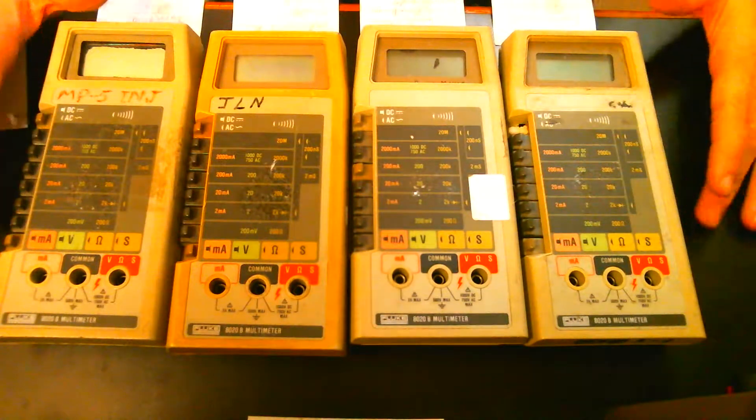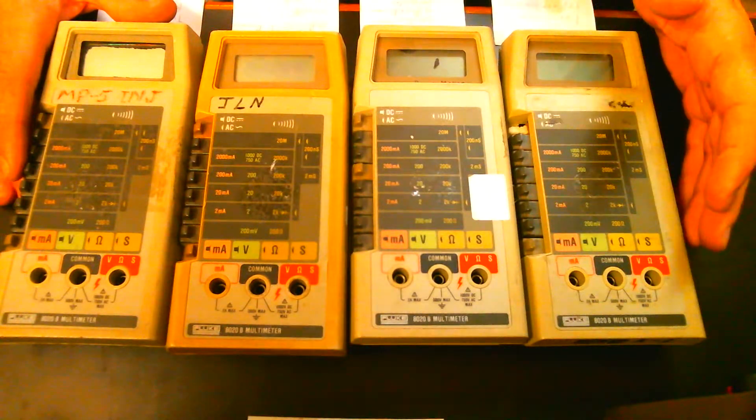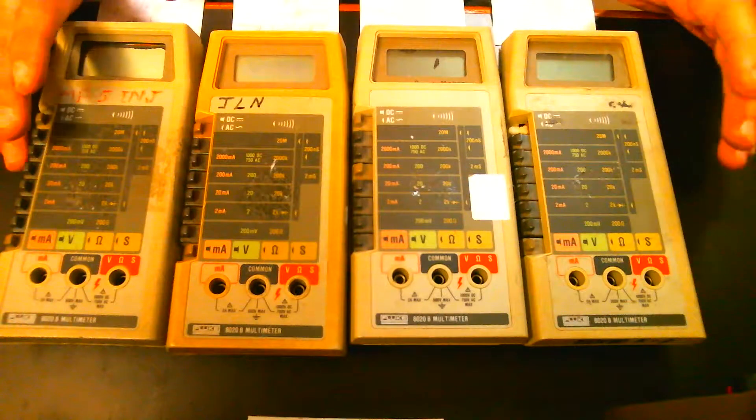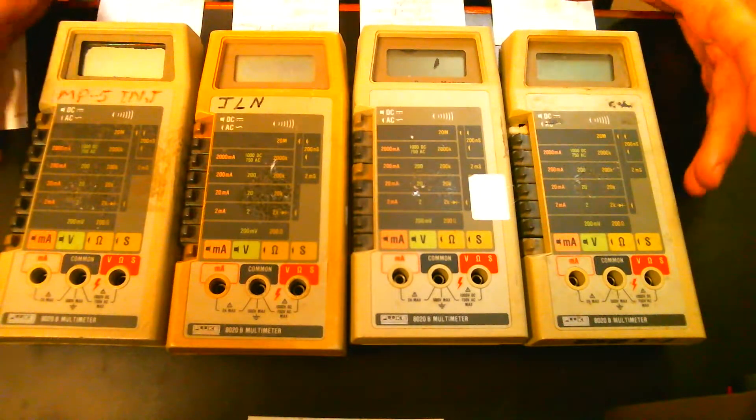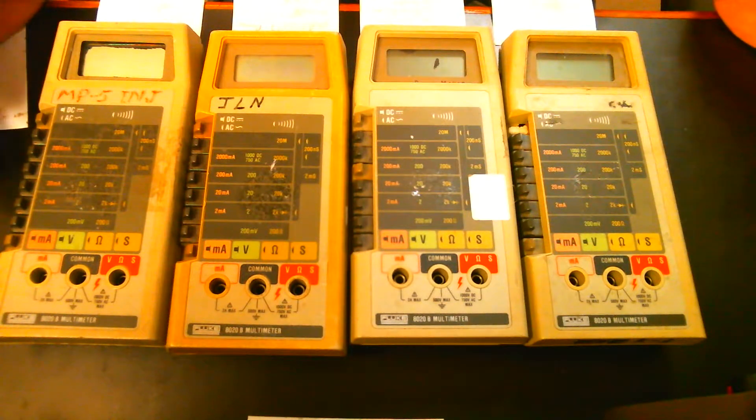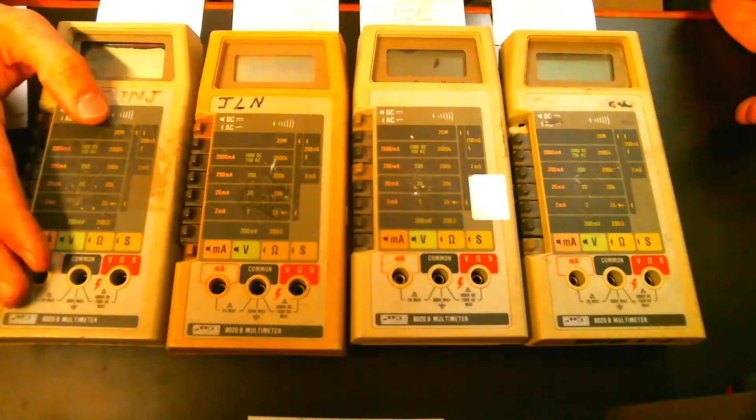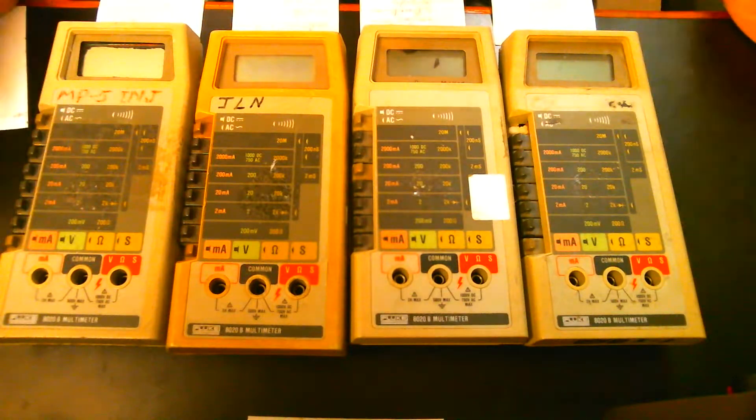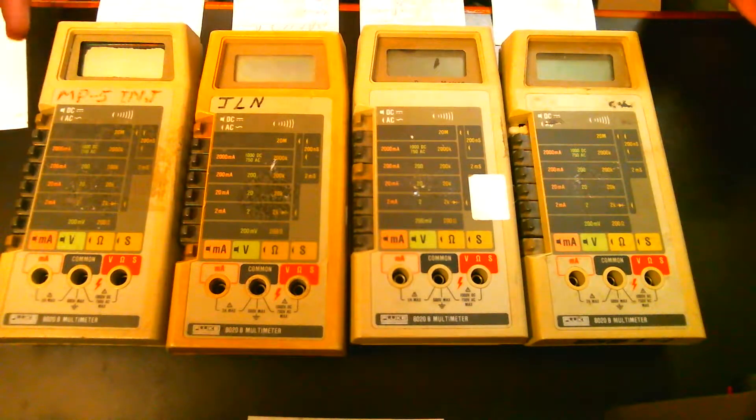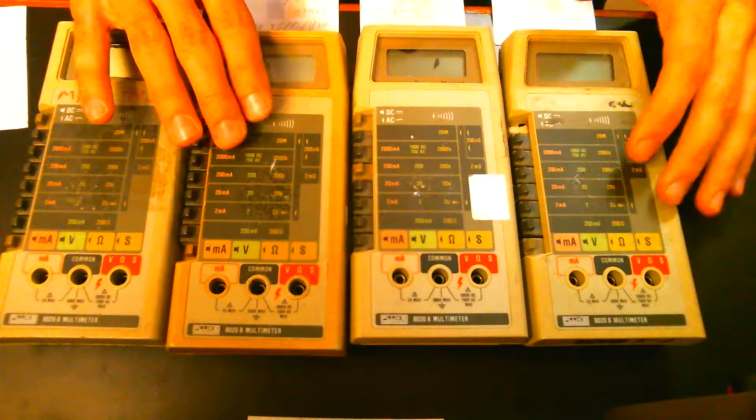I have gone through them, done a few function tests, and it looks like three of them will actually be viable to become good meters, and one of them just looks like it is absolutely trashed. That would be this one here, which I believe will actually become a donor meter, because there are some parts that these other ones need, and I think it'll work out really great that I'll be able to get three good meters out of here.